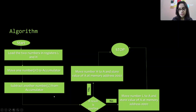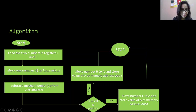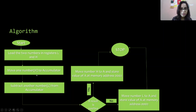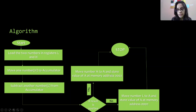Two cases can arise. In this example the result is positive, which means we subtracted L from the accumulator (which held H's value) and got a positive result — so H was greater. We then move the number from H into the accumulator and store that value at memory address 0002, which is our output address. Then the program ends.